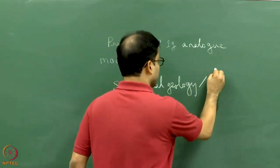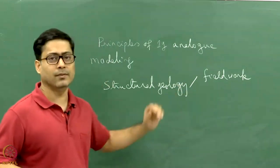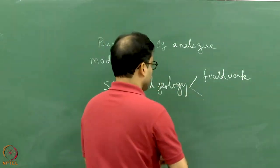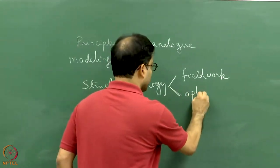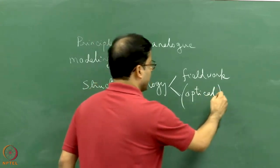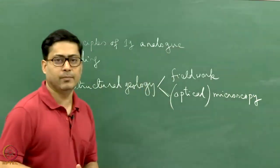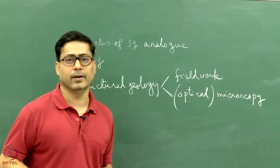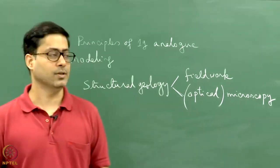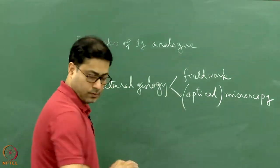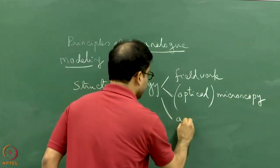One approach is field work. If there is any doubt with the deformation we want to cross-check, there is another approach: looking at structural geology through optical microscopy. Deformation that is ambiguous can be cross-checked under an optical microscope, or even under a microscope with much higher resolution. And here comes the analog model, which is the topic today.